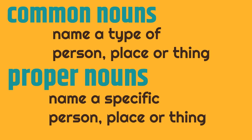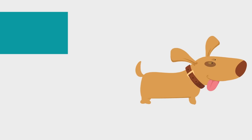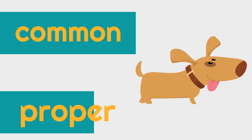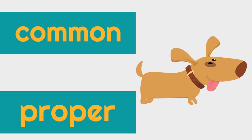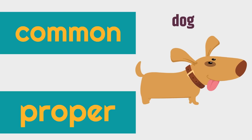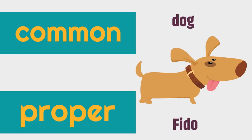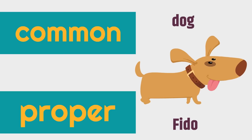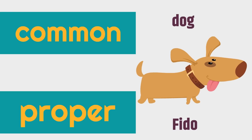Now let's show you with some examples. Here's our first example. What's the common noun for this? Dog. This is a dog. Dog is the common noun. Now, let's say this dog's name is Fido. Fido is the proper noun for this dog, because that's the specific name of this dog. Dog is the type of thing that this is, so it's the common noun. The common noun is dog. The proper noun for this is Fido.